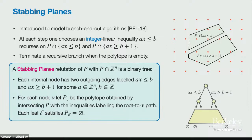On the question of why we branch on ax ≥ B+1 vs ax ≤ B: we're picking an integer linear inequality and branching on whether it's true or false over the integers — one side corresponds to it being true, the other to it being false. At the leaves, we can run a linear program to check that the intersection of everything down the path has no points at all; Farkas' lemma also works.